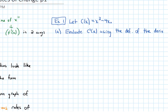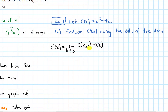Let's look at an example. I have the function c of x equals x cubed minus 4x. In part a, let's evaluate its derivative — which represents the slope of the tangent line — using the definition of the derivative. So c prime of x equals the limit as h approaches 0 of c of x plus h minus c of x, all over h. Now let's start to plug in. For c of x plus h, whatever's in the parentheses — in this case x plus h — I have to plug in for the variable.